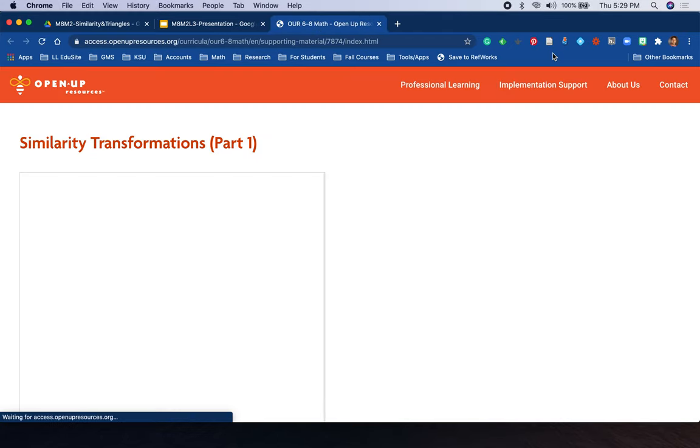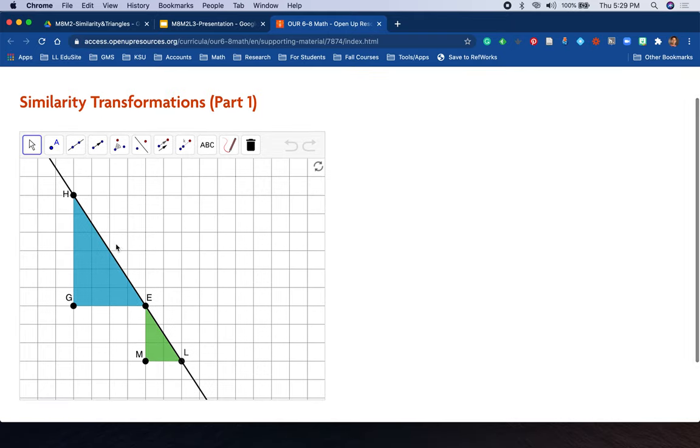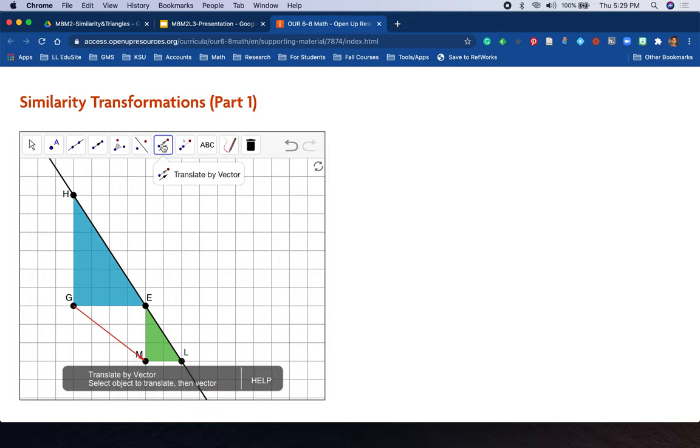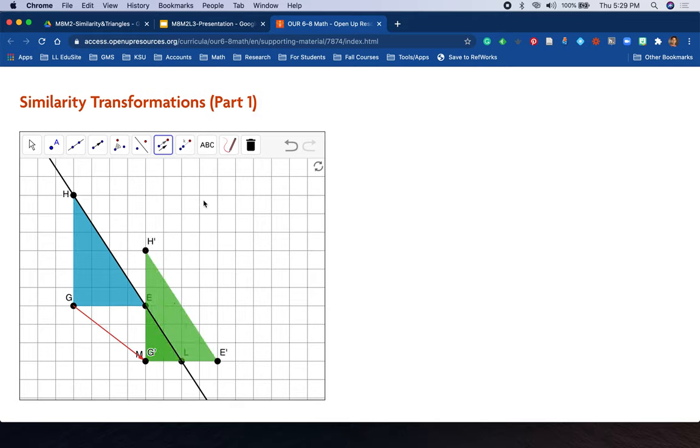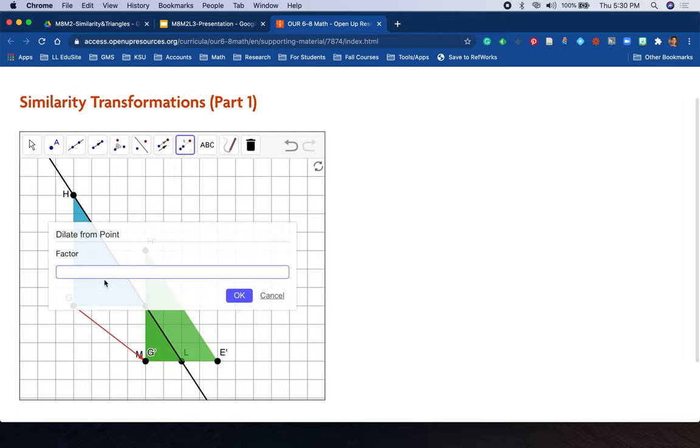In class, we worked on this first one together, and we went through each of these commands. So we have our line, we have our vector, in which I drew the vector from corresponding vertices, from the pre-image to the image. That way, I was able to go ahead and translate by that vector. And then use the new dilation from a point feature to scale it.